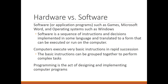Software includes programs like games, Microsoft Word, or operating systems like Windows or Macintosh. Software is basically a sequence of instructions that tells the computer to perform specific tasks. These instructions handle the hardware, and you can see the sequence of results on your monitor. Every instruction is executed by the computer and the result is shown on your screen.